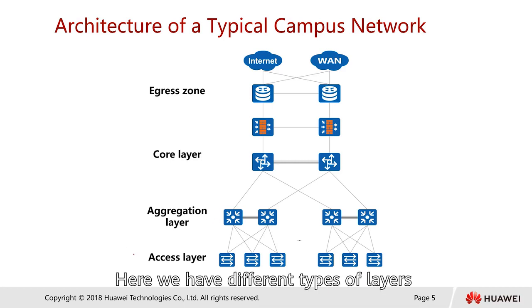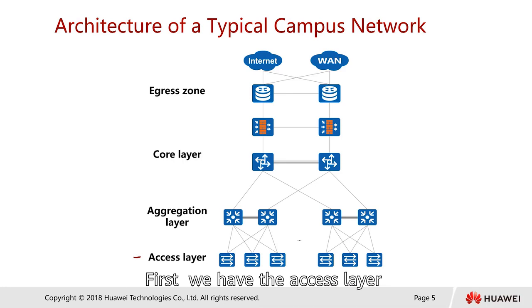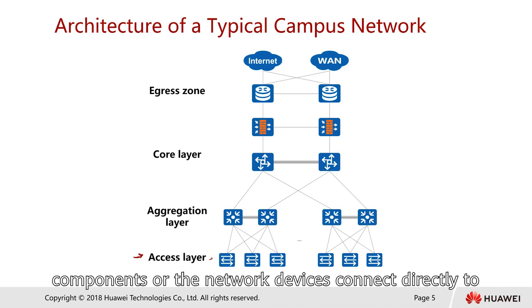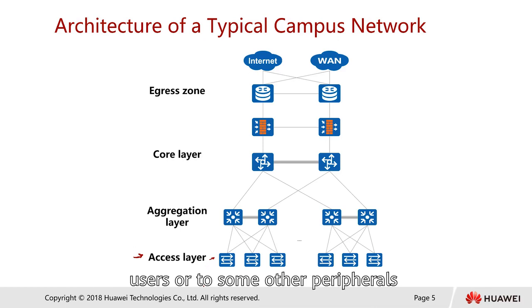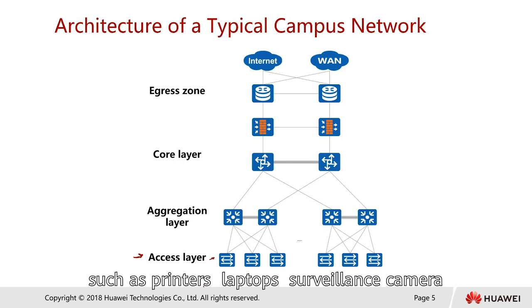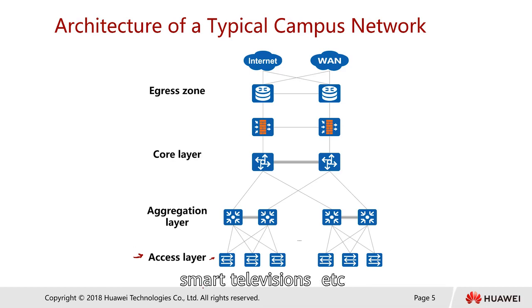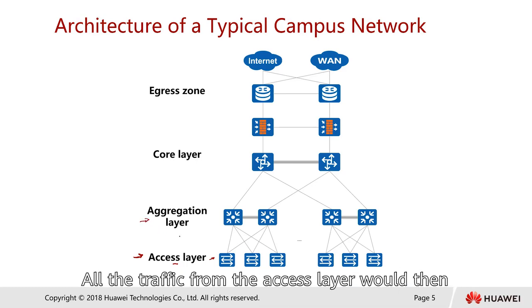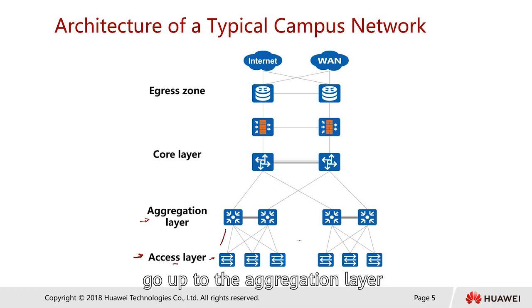Here we have different types of layers. First we have the access layer. The access layer is where all the network components or network devices connect directly to the user, or maybe to peripherals such as printers, laptops, surveillance cameras, smart televisions, etc. This is the access layer.